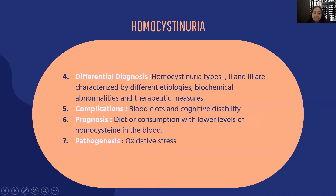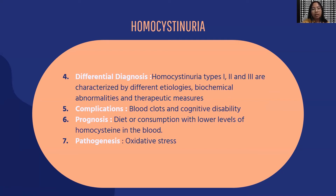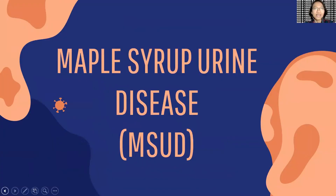Homocystinuria types 1, 2, and 3 are characterized by different etiologies, biochemical abnormalities, and therapeutic measures. A rapid and simple procedure for differential diagnosis of the three types involves analyzing the urine of patients. The most serious complication of homocystinuria is blood clots, which can be life-threatening and increase stroke risk. Cognitive disability is also a possibility. Diet or supplementation that lowers homocysteine levels in the blood can prevent symptoms; however, regular blood clot checkups are required. Oxidative stress is one component of the pathogenesis, with enzymatic and non-enzymatic antioxidant defenses diminished in affected individuals.